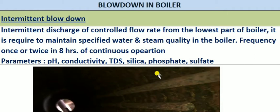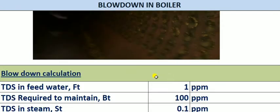Intermittent blowdown normally operates once in 8 hours. In the worst case, once every 4 hours, based on our water quality achievement. It is not a continuous operation. The intermittent blowdown comes from the lowest part of the boiler — that is from the mud drum. There is a drain line from the mud drum through which it operates. The valve will not be continuously fully open; it will be throttled during operation and varied based on the requirement.